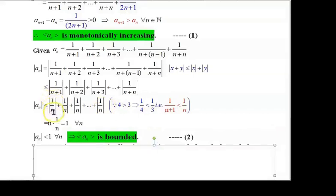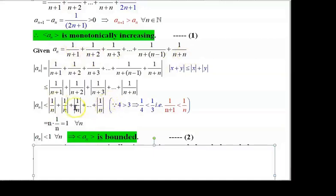Therefore, |aₙ| < 1/n + 1/n + 1/n + ... There are n terms in aₙ, as the second term goes from 1 to n. Hence this equals n × (1/n) = 1.